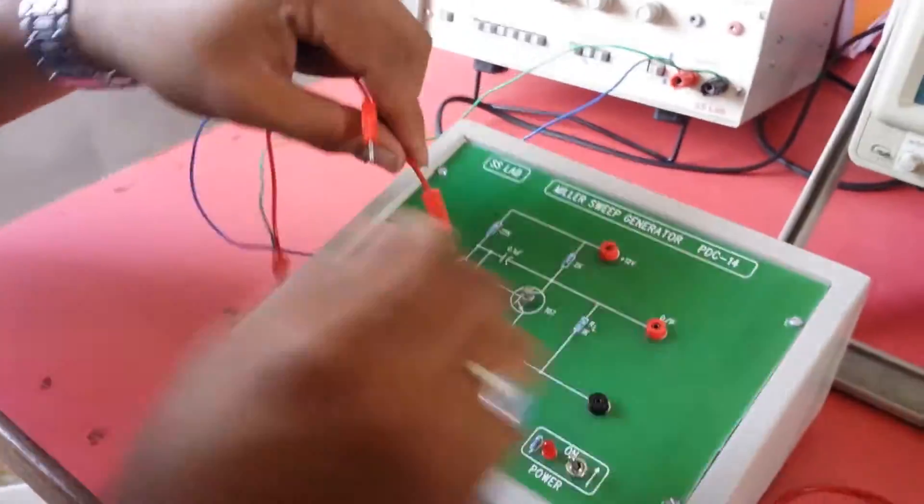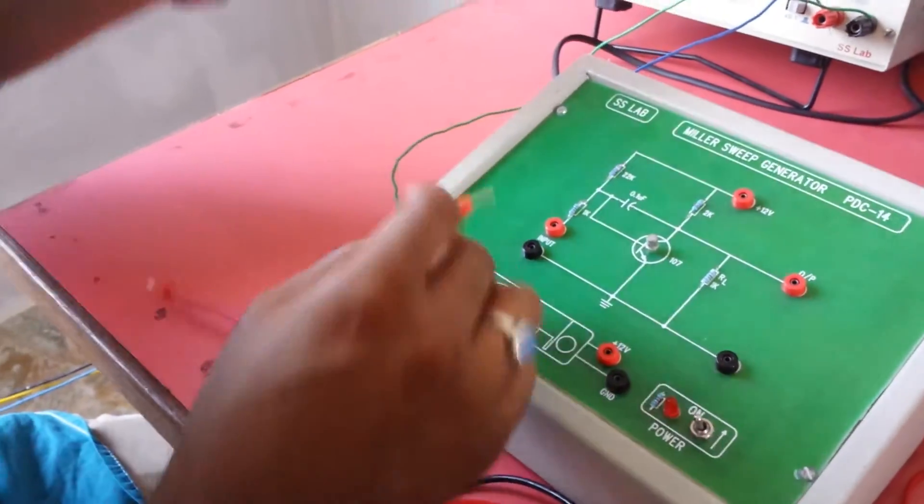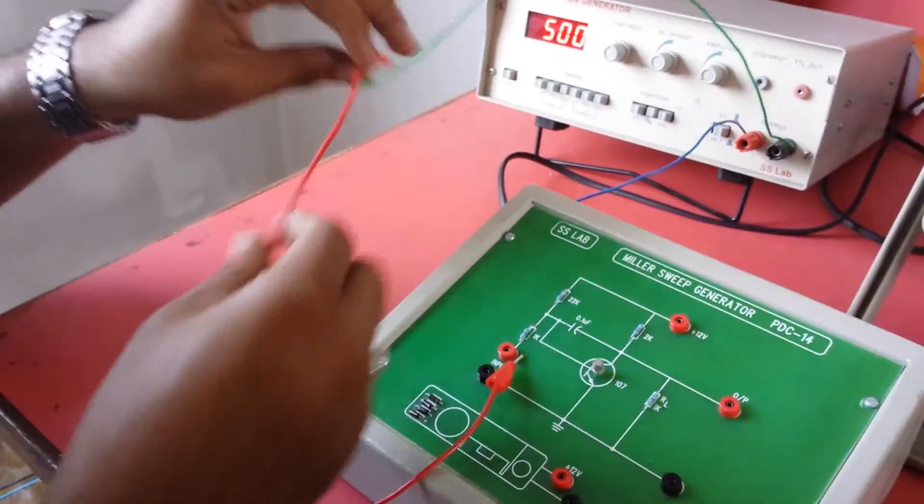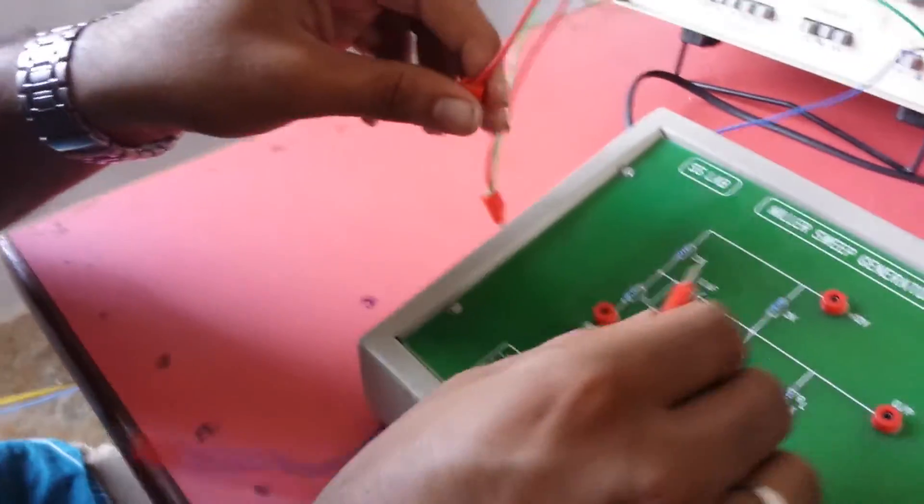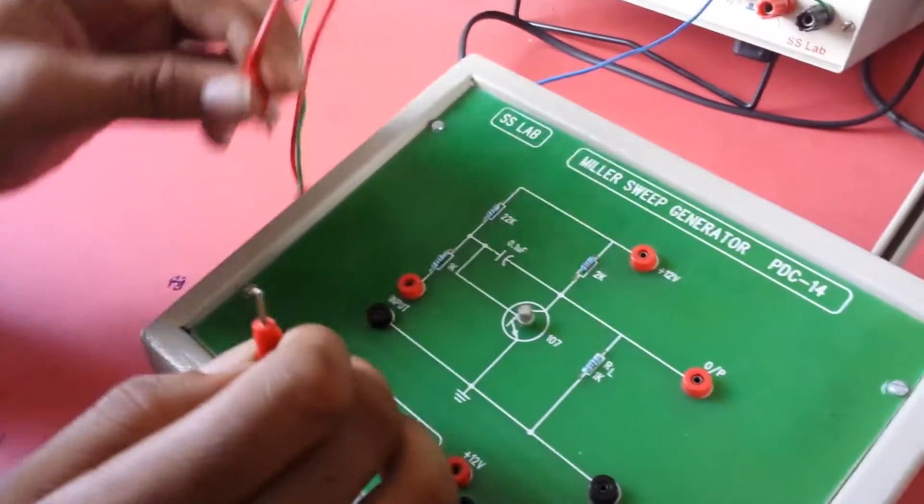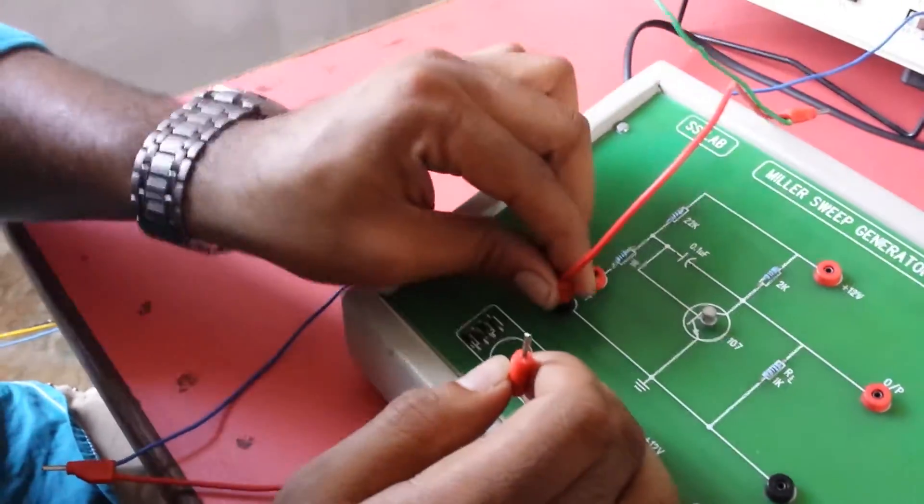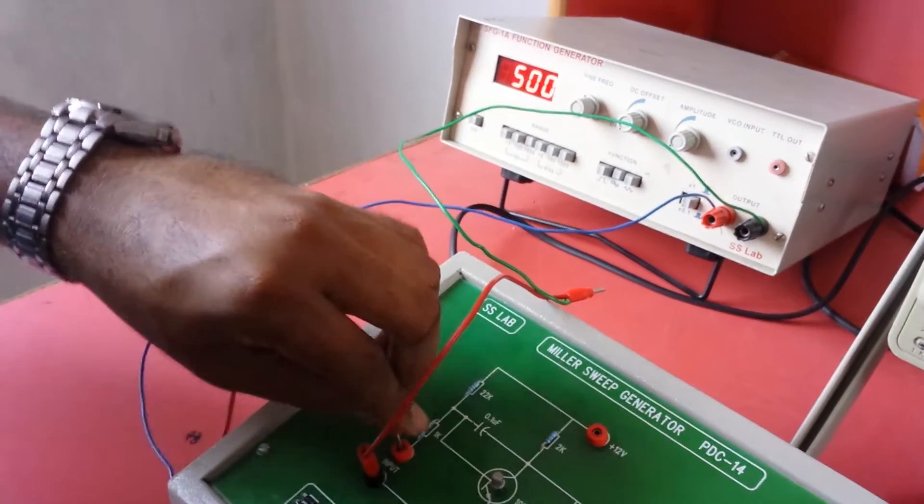Let's pull out the cords. I will connect the, I'm sorry, connect the input. It is Miller sweep generator input. The black color is all connected into the black, red is connected into the red. Okay.